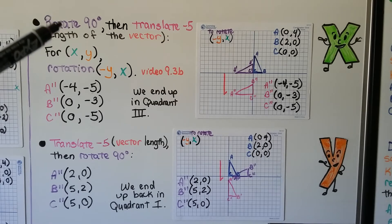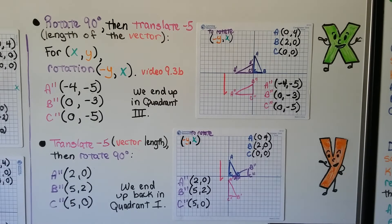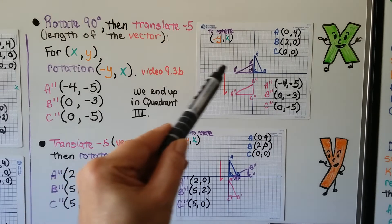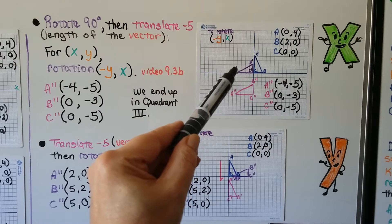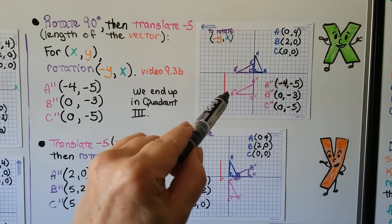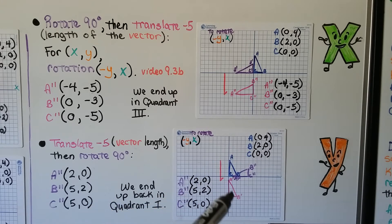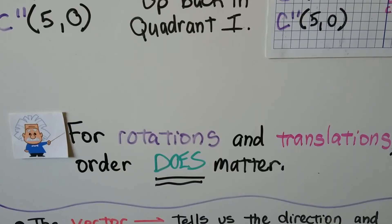What happens if we rotate 90 degrees and then translate negative 5, the length of the vector? For x, y, our rotation is going to be the inverse of y and then x — that was the 9.3b video. We start in quadrant 1 with our little blue triangle, rotate it 90 degrees into quadrant 2, then translate negative 5 and end up in quadrant 3. Now if we translate first, we move to quadrant 4, then rotate 90 degrees and end up back in quadrant 1. So for rotations and translations, order does matter.